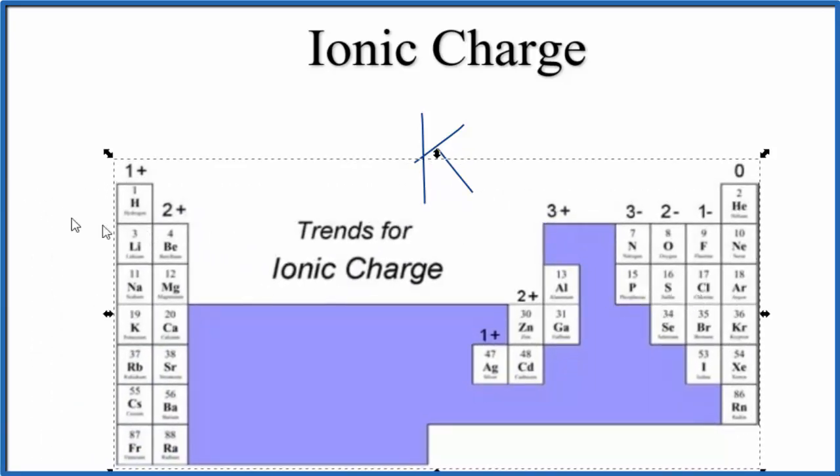On the periodic table, we can see that the groups, the ionic charge, it follows a pattern. Everything in group one is one plus. Group two, that's going to be two plus. We skip these transition metals, go all the way over here to the noble gases, where they don't have an ionic charge, they're neutral.